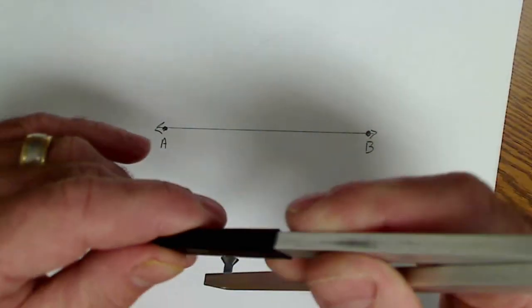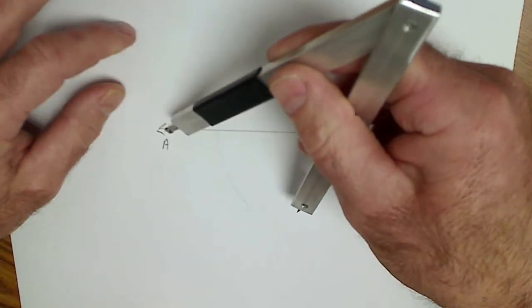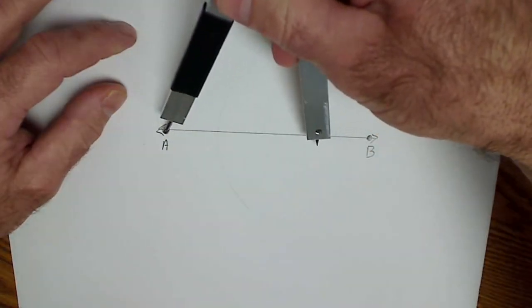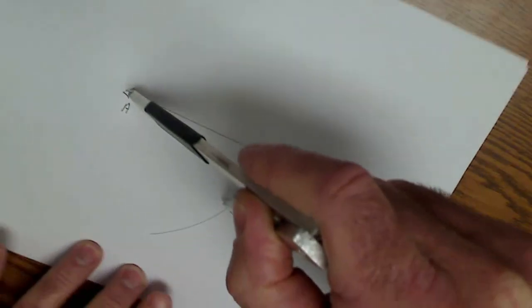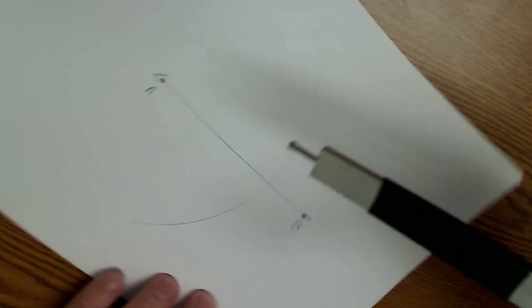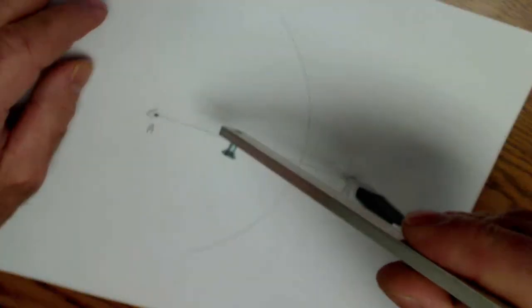I use my compass. It has to be set greater than the midpoint. I draw an arc. Then I create the same arc from the other point.